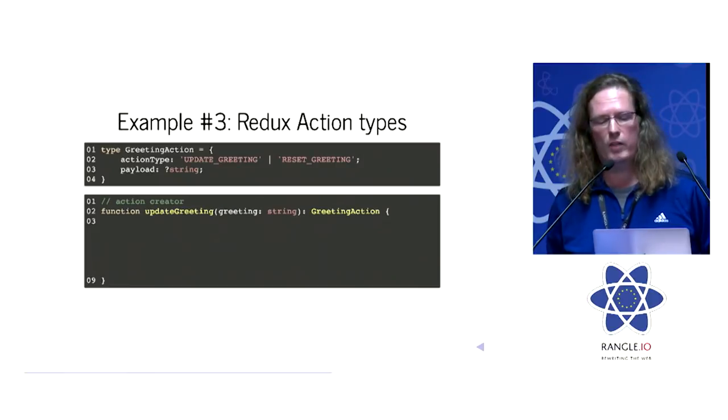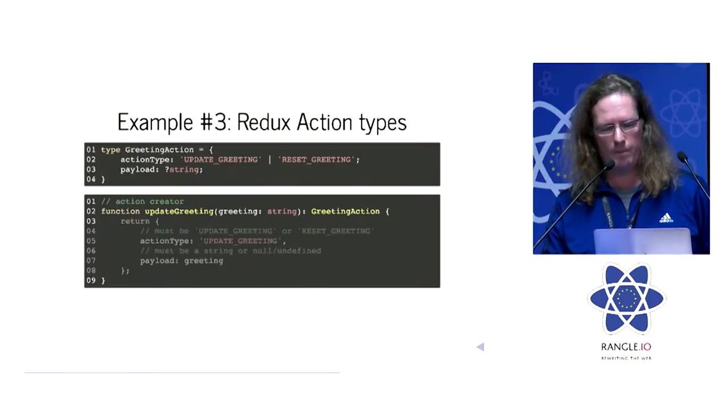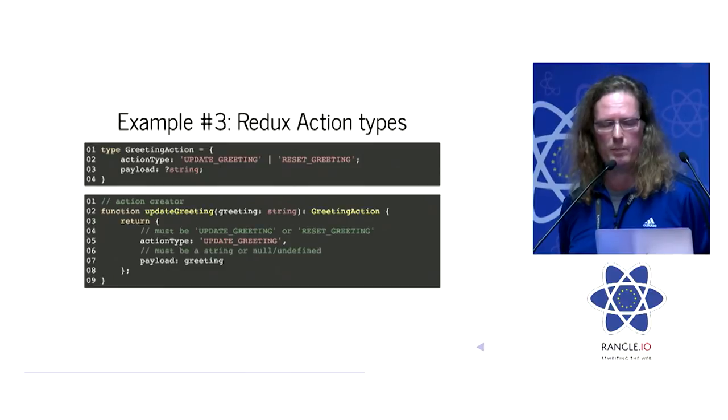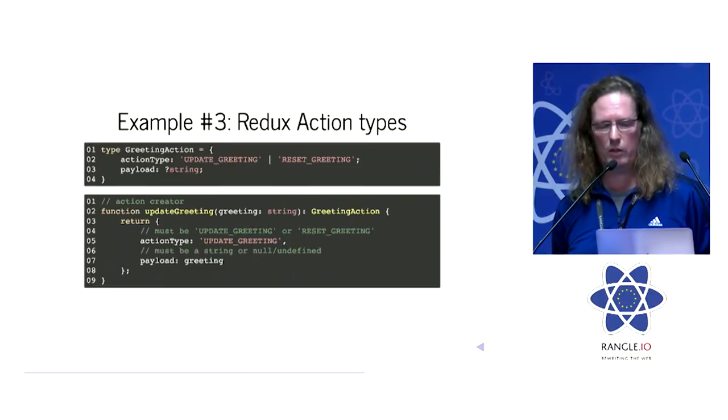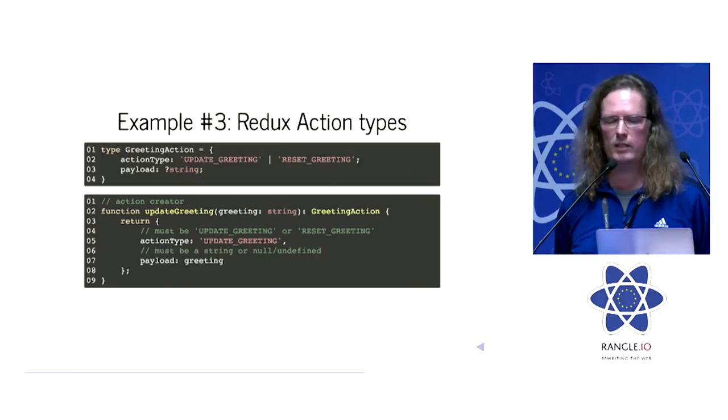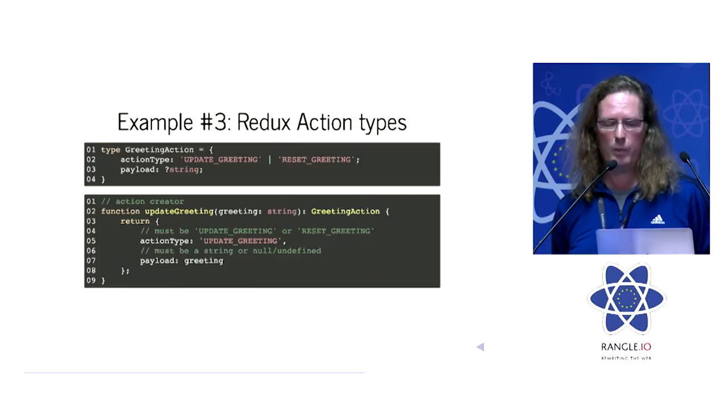You have to specify that in Flow. That's also different from TypeScript. To finish this up, this is a valid thing to return because action type is of string update greeting. If you provide anything else, there would be an error. As property, I provide the greeting and there you go.